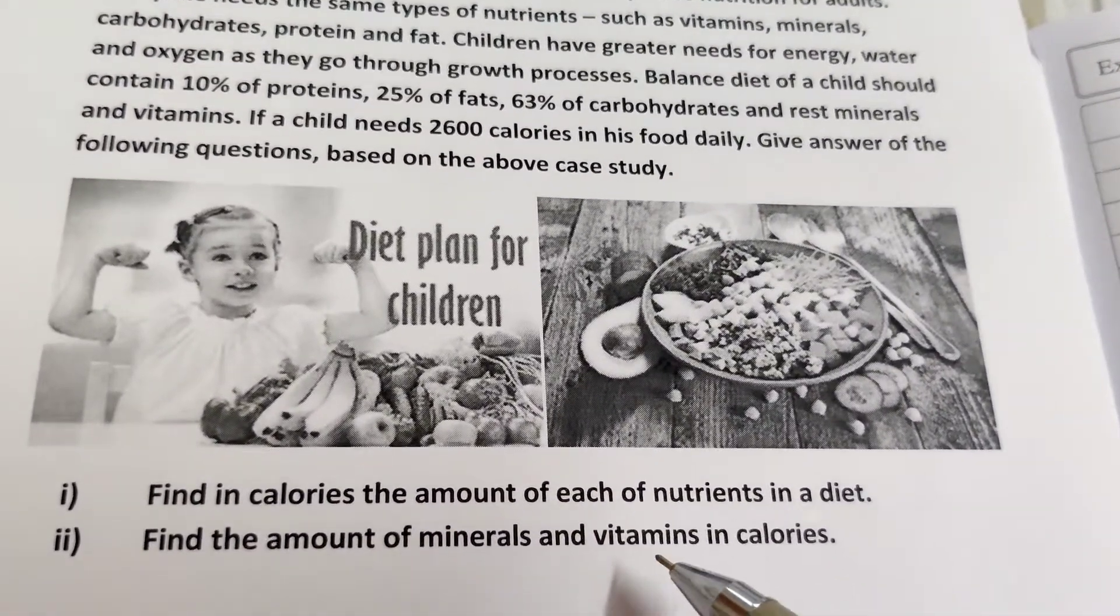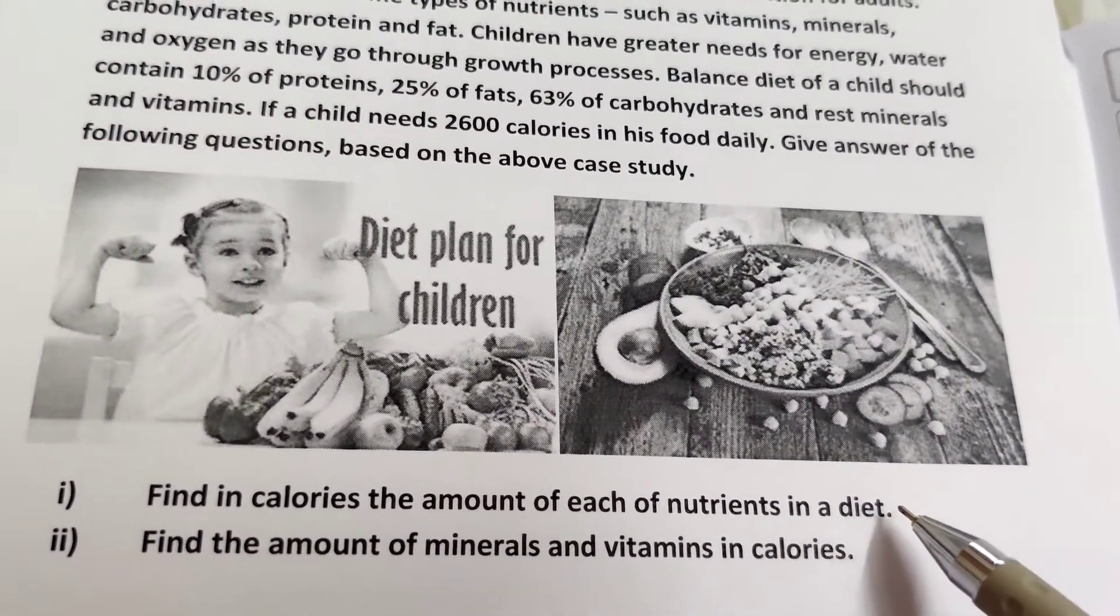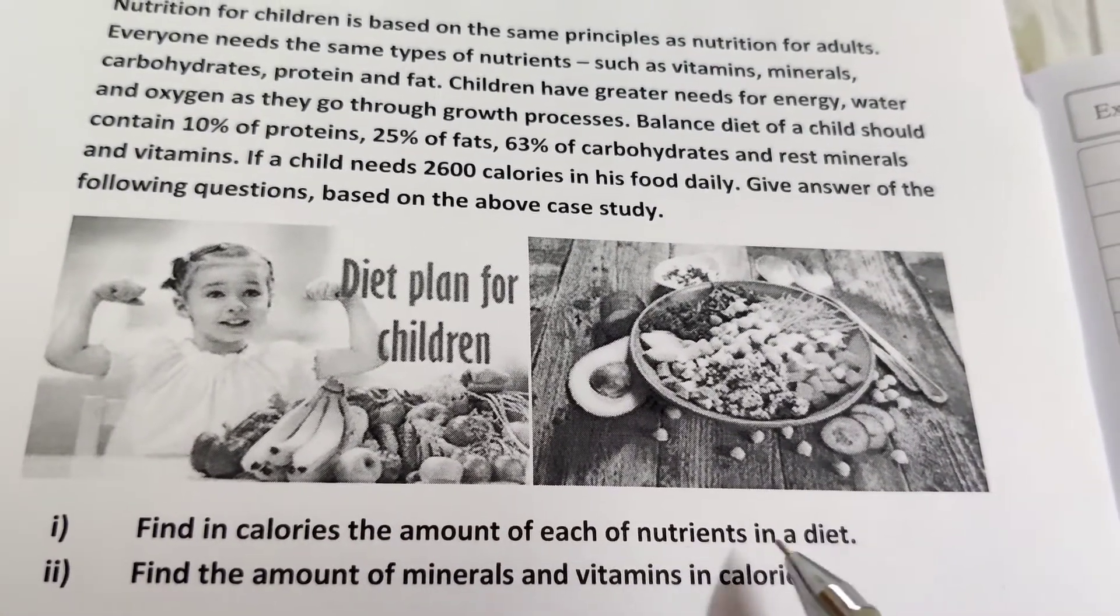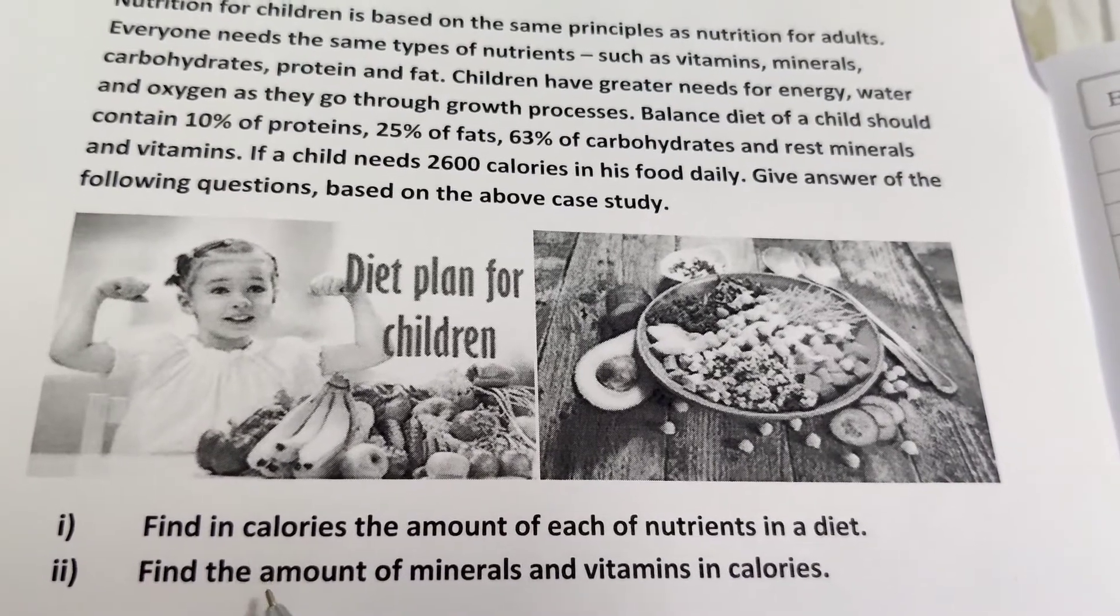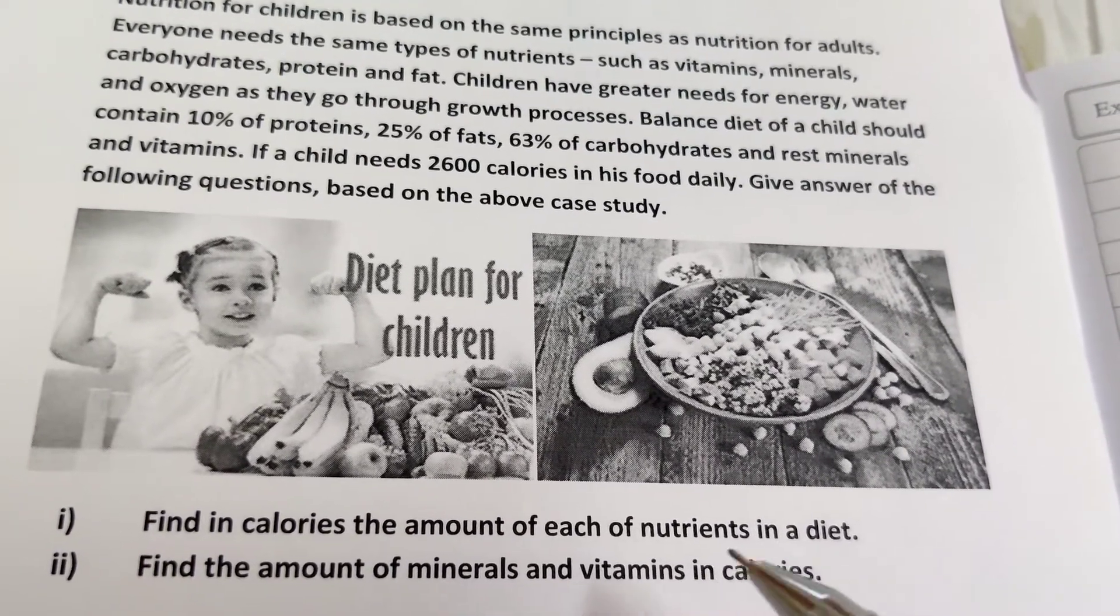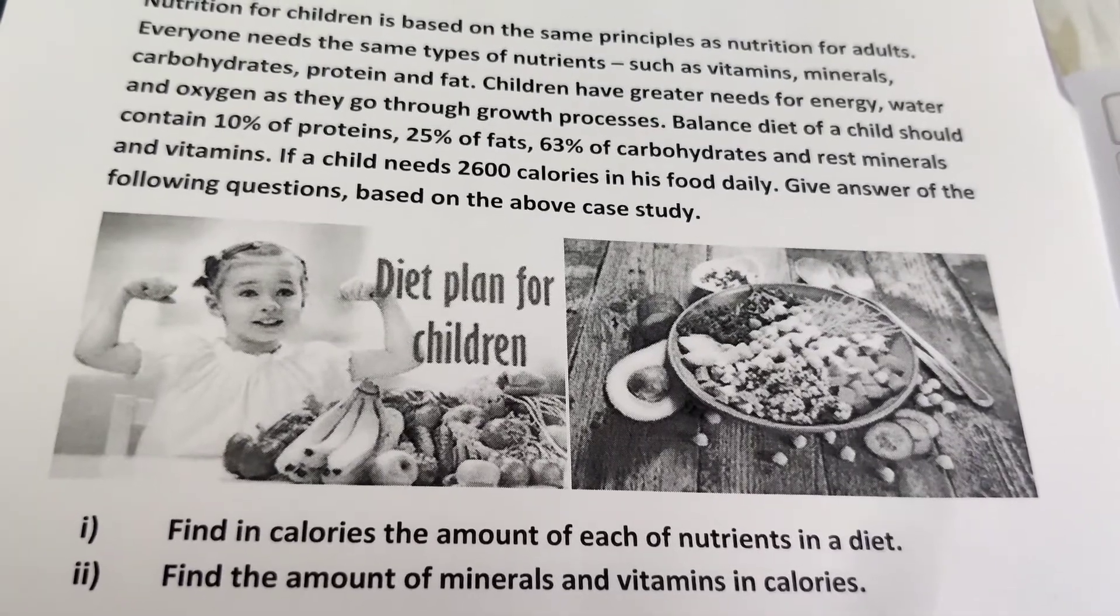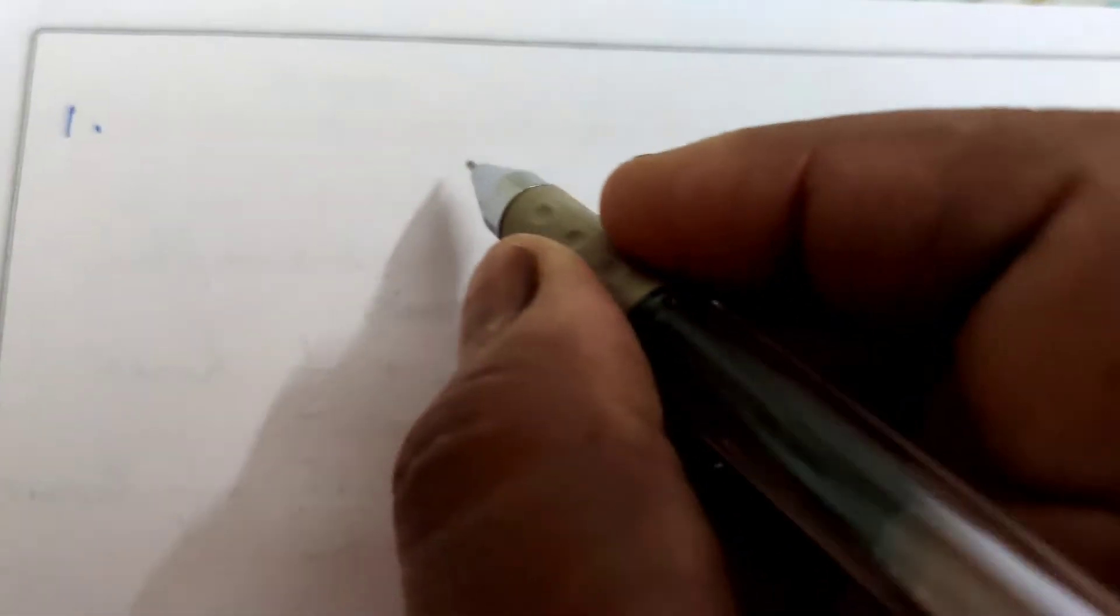First question: find in calories the amount of each nutrient in a diet. And the second: find the amount of minerals and vitamins in calories. Okay, total calories.